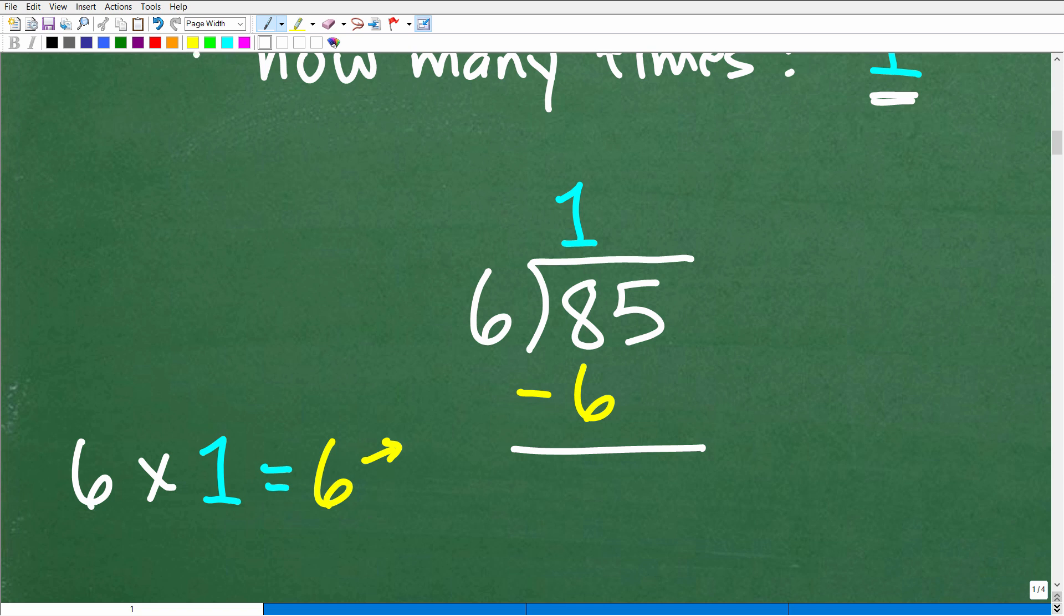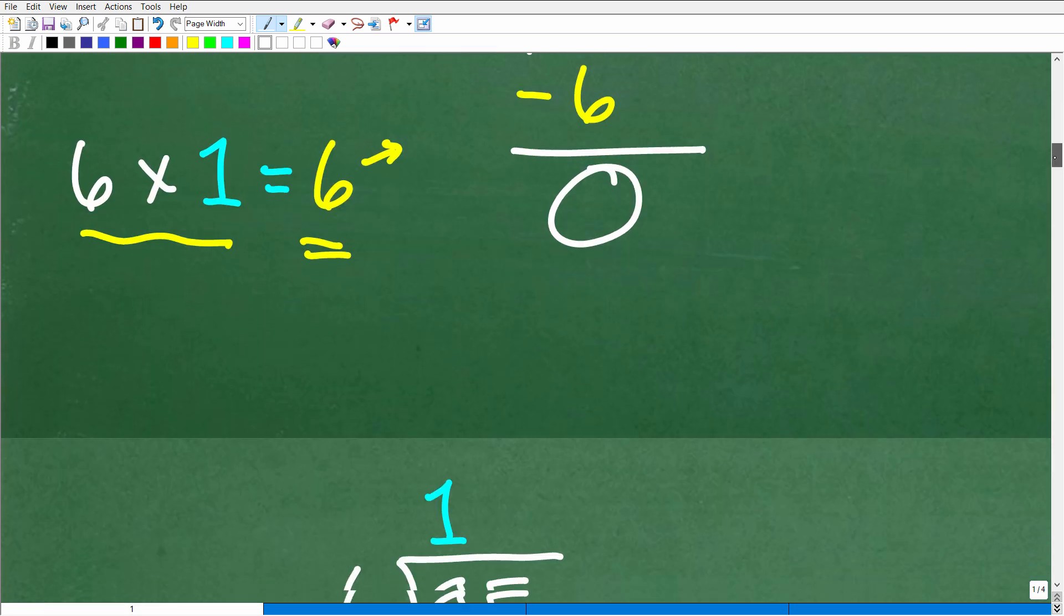What's step 2? Well, the next thing we need to do - the procedure tells us to take this number, this 1 that we got from that first step, and we're going to multiply it by that 6. So 6 times 1 is 6. We're going to take the answer to this product and put it right underneath the 8. So we're going to subtract 6 away. Hopefully you're starting to appreciate your elementary teachers or primary school teachers.